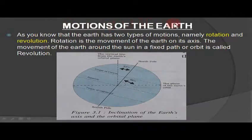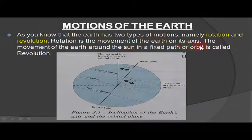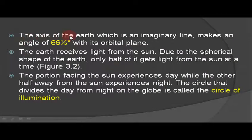The earth has two types of motions: rotation and revolution. Rotation is the movement of the earth on its axis. The movement of the earth around the sun in a fixed path or orbit is called revolution. The axis of the earth, which is an imaginary line, makes an angle of 66.5 degrees with its orbital plane.